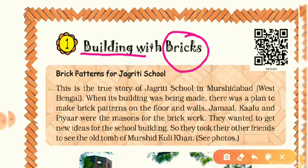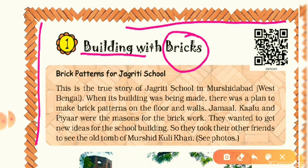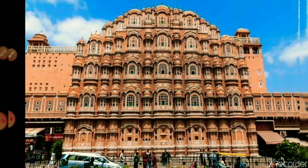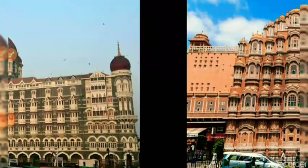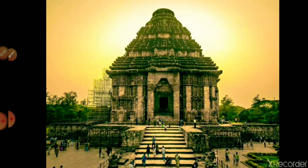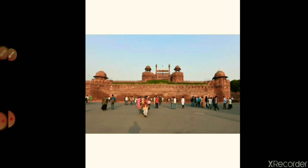You all know about bricks — here are some pictures of bricks you can see on the screen. Now, what materials are used to make a building? Some of them are iron bars, sand, water, cement, and the most important thing is brick. Let's have a look at some ancient buildings of India. The first one on your screen is Hawa Mahal, which is in Jaipur. The second one is the Sun Temple in Konark, then Rashtrapati Bhavan.